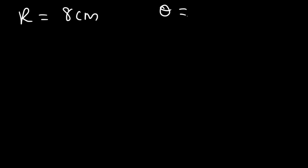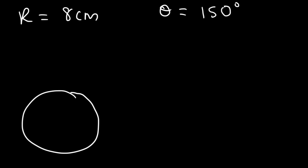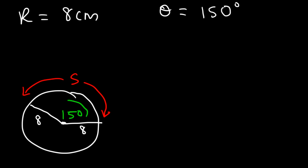Let's try another example. The radius is 8 centimeters and the angle theta is 150 degrees. If you draw a picture, this angle is about 150 degrees, r is 8, and we're looking for the arc length s between those two points. Go ahead and calculate s.